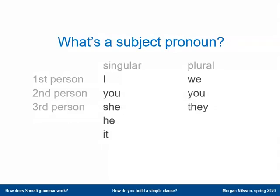Now, a minimal Somali clause contains one of those sentence particles, and right after the sentence particle we also have a subject pronoun. Here are the English subject pronouns: I, you, she, it, we, you, they. They are organized in a table according to person — first, second, and third — and then singular and plural, as is the tradition.